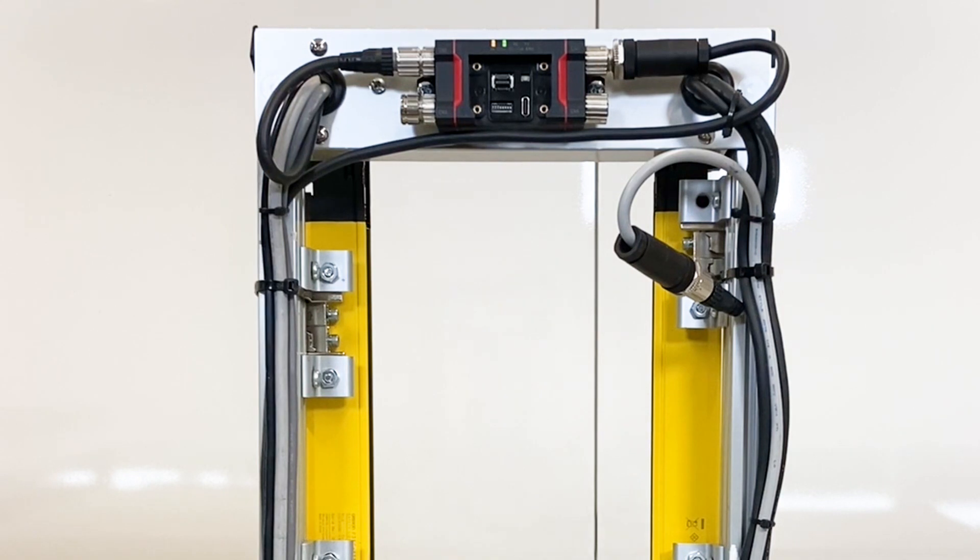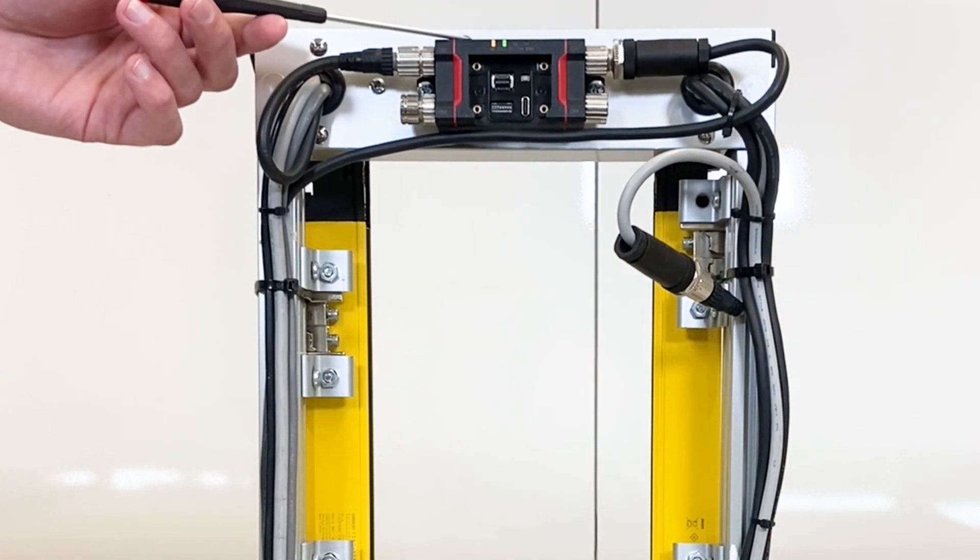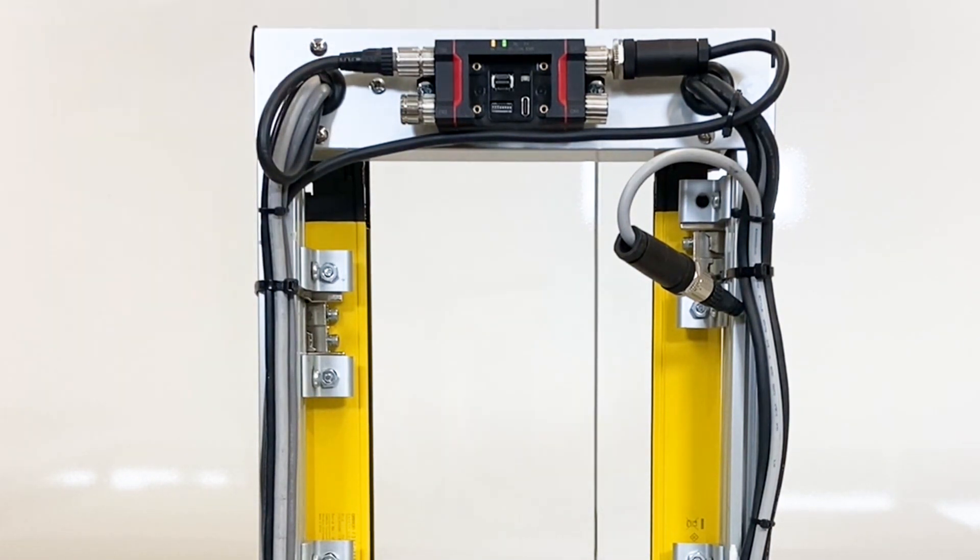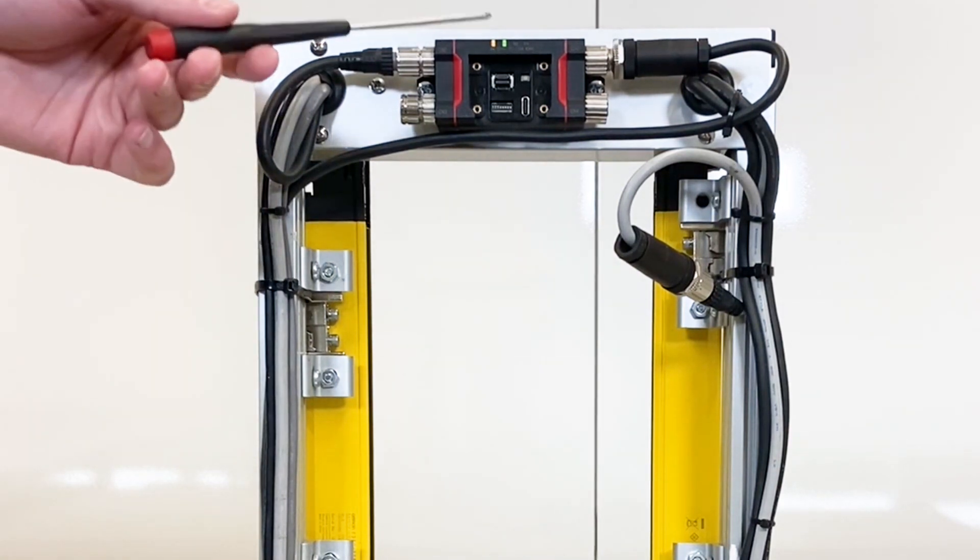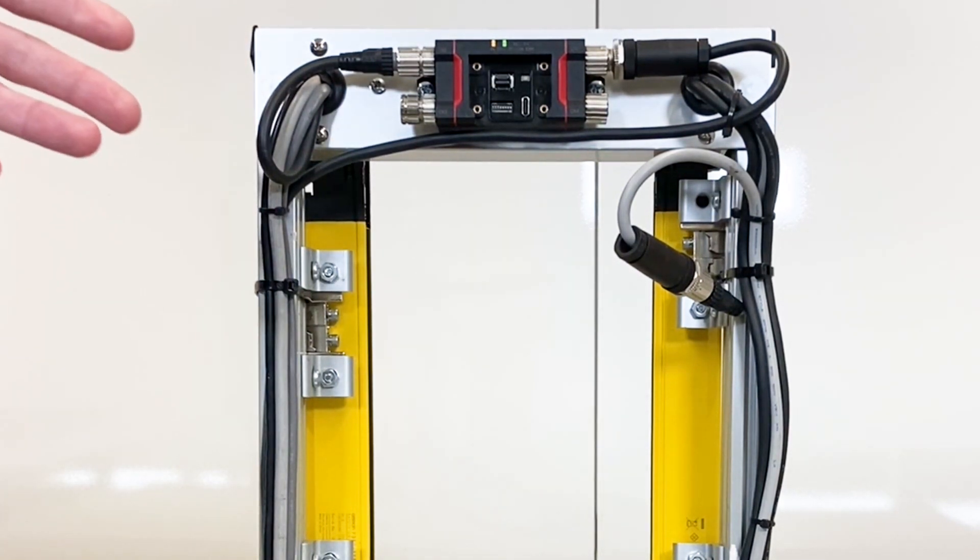As you can see, you can check the indicator lights on top to make sure that the EDM was properly downloaded to your safety light curtain. So green and orange means that everything was downloaded properly.